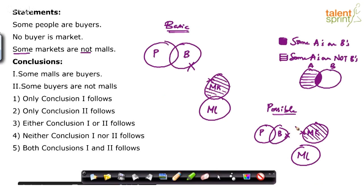Now look at the conclusions. Always refer to the basic diagram first. Conclusion 1: some malls are buyers. In the basic diagram, malls and buyers do not overlap at all. If a conclusion does not follow the basic diagram, it is wrong. So conclusion 1 — some malls are buyers — is wrong.